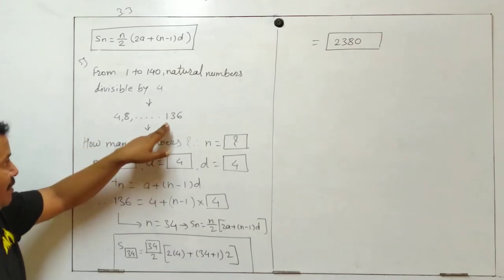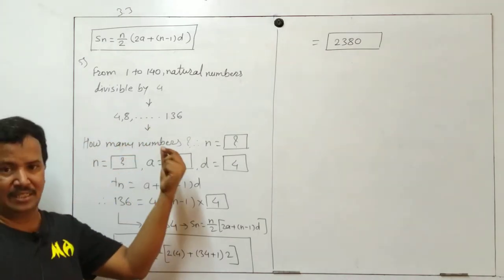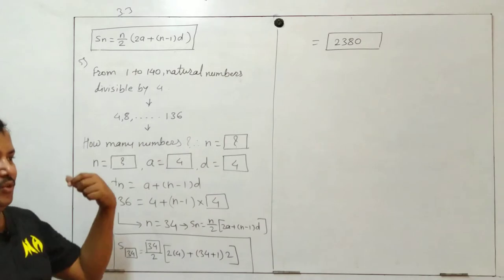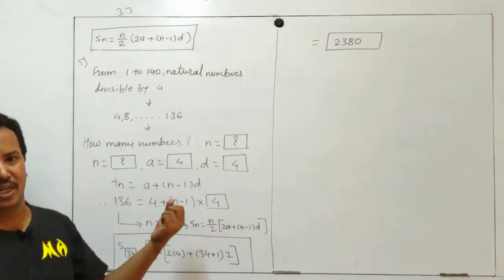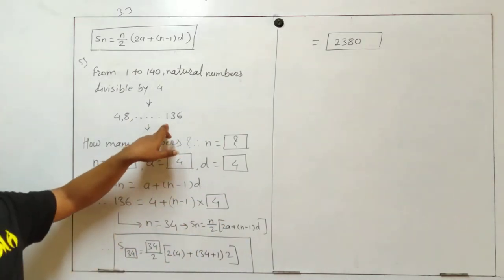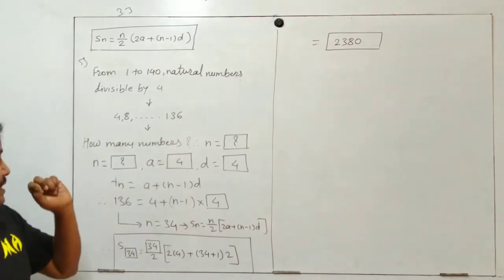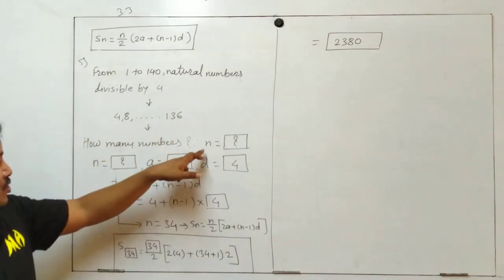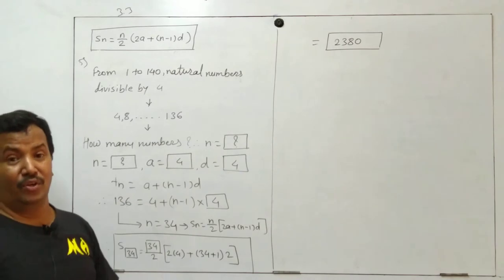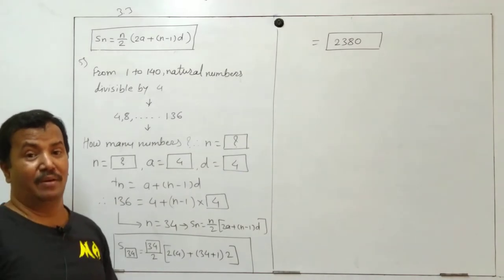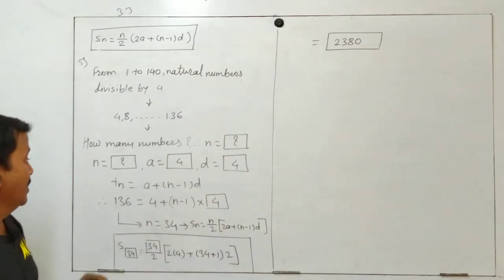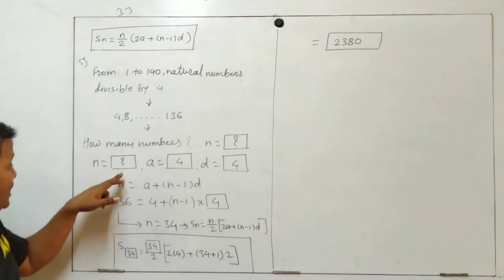Four, eight... one thirty six is the last number, because from one to one forty, one forty is not counted. So the last number is one thirty six. How many numbers? So n is equal to question mark, because we don't know how many numbers are there.